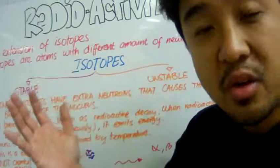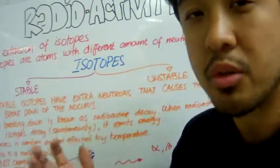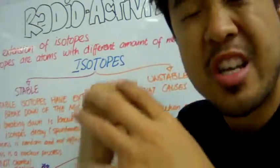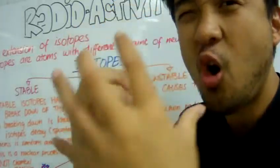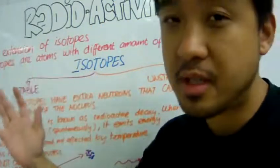You have, on one hand, isotopes that have a very stable nucleus, which means it has the correct ratio of protons and neutrons that holds them together, and everything's great.